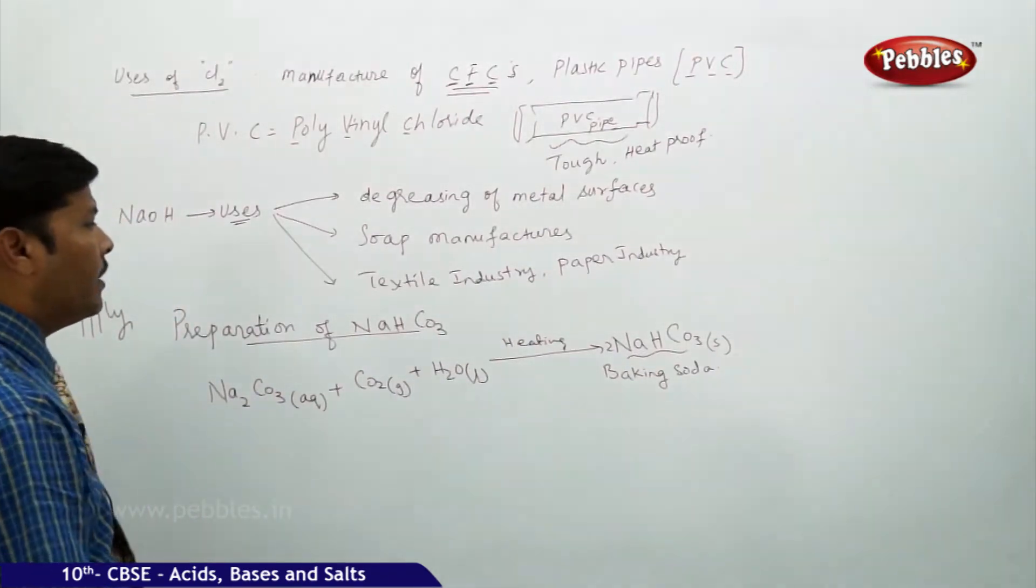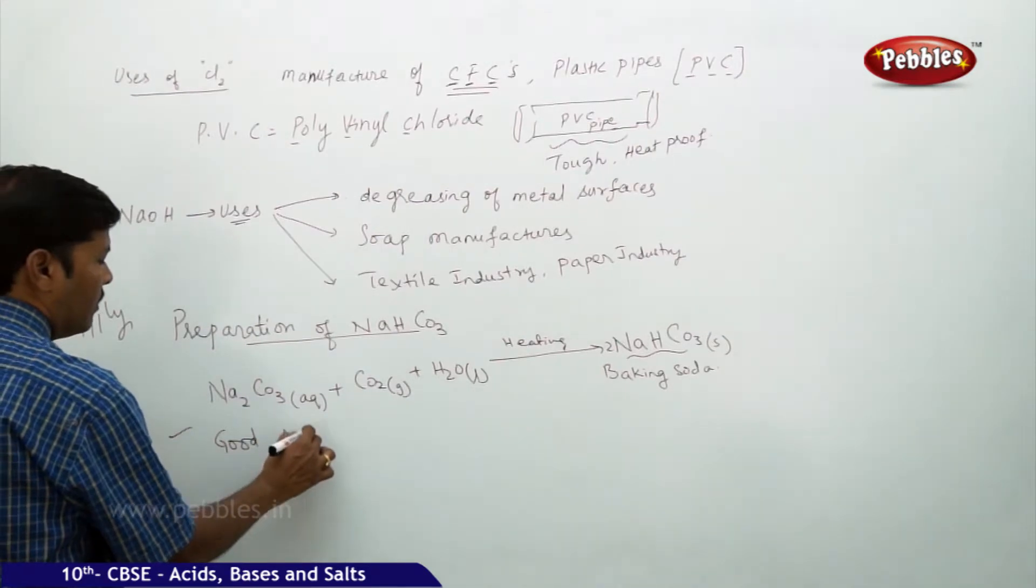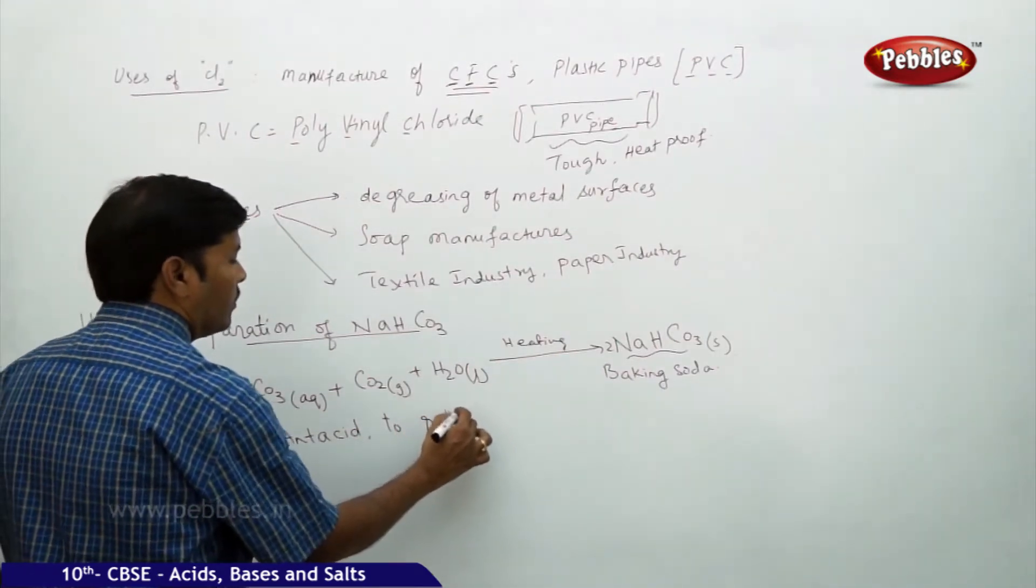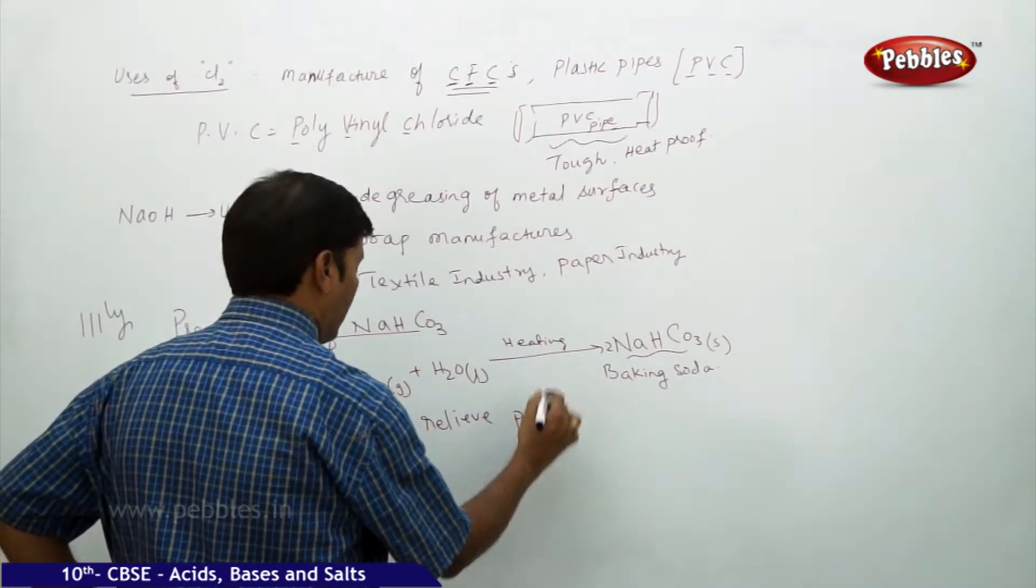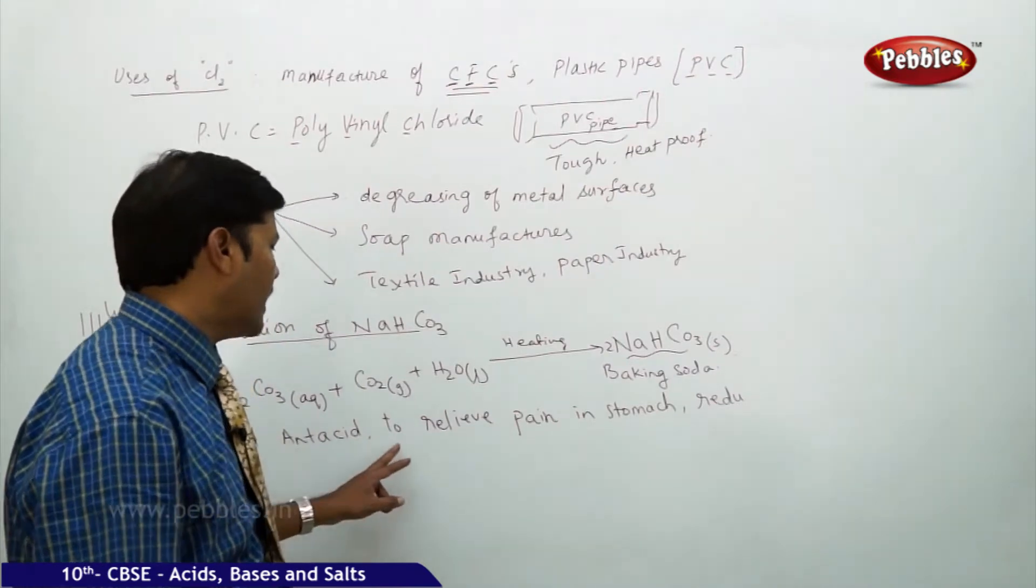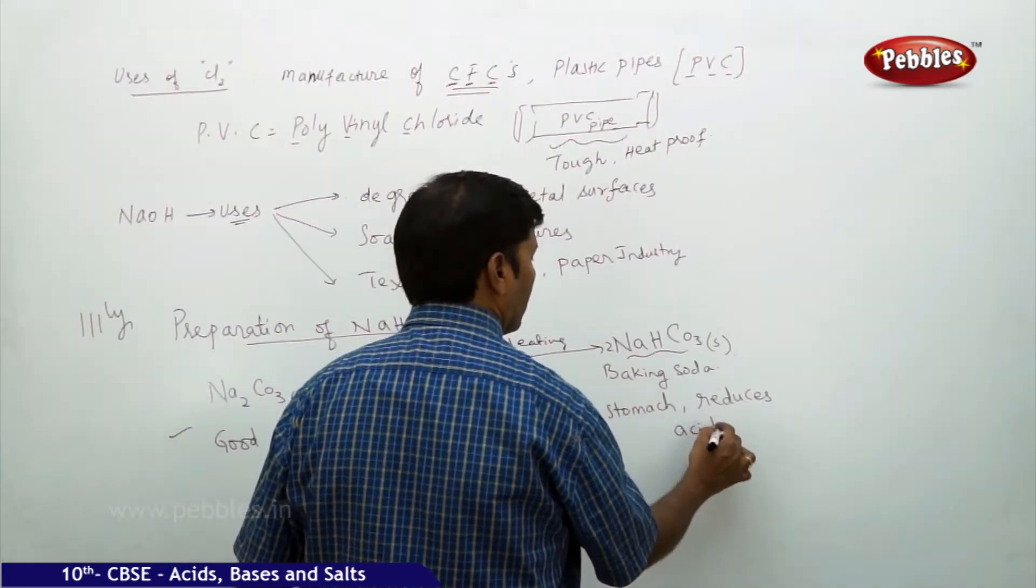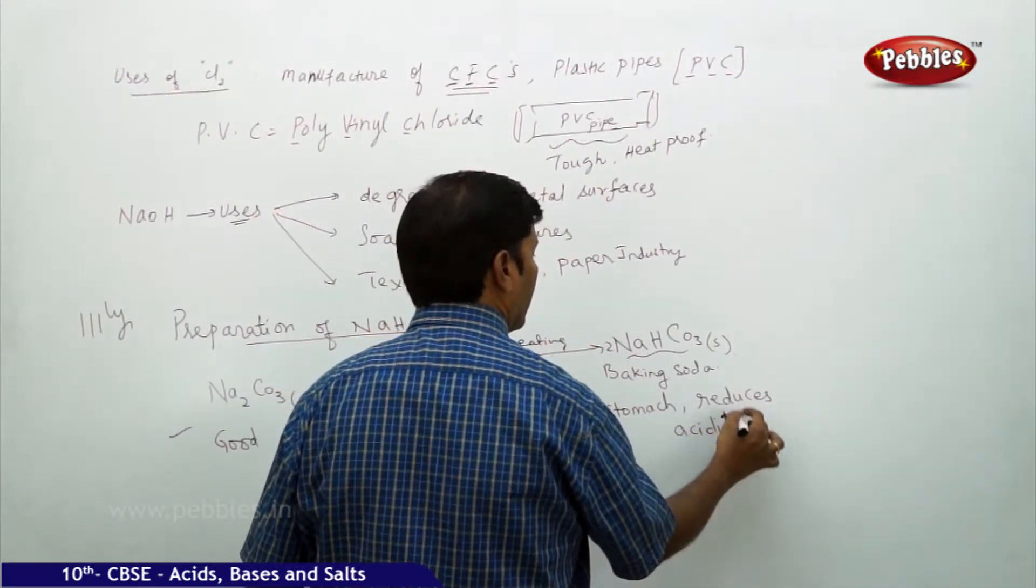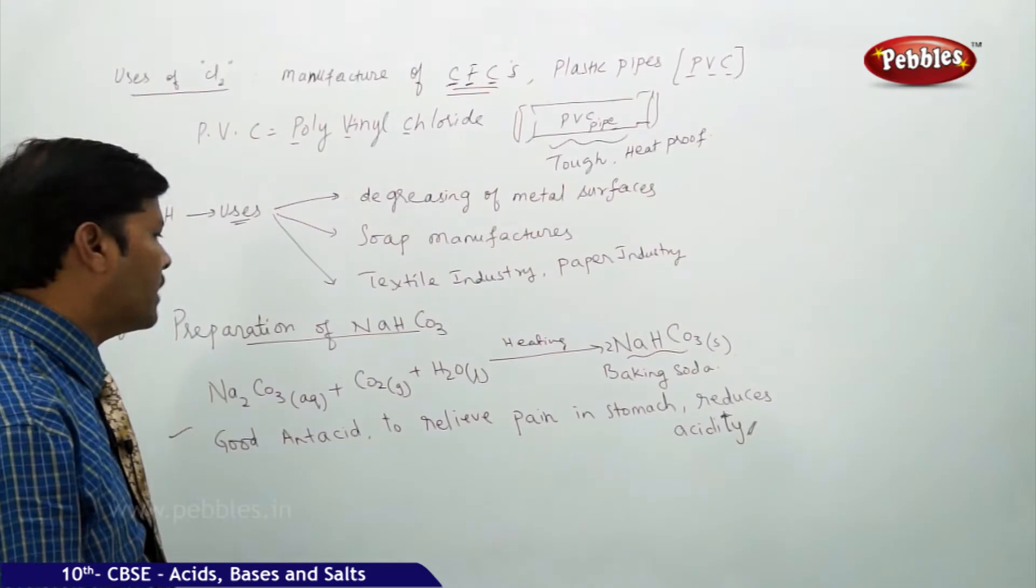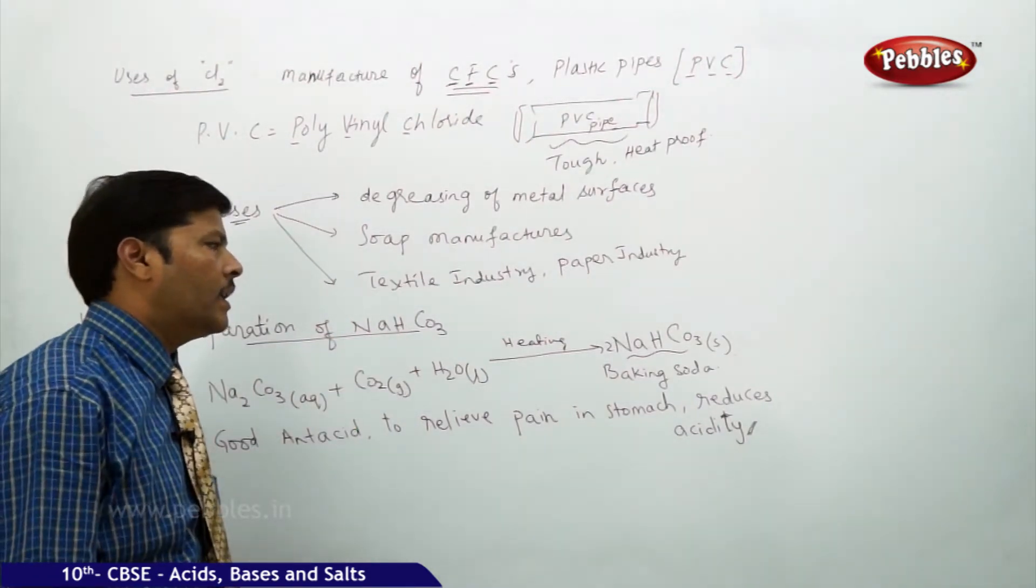This is how we try to prepare the baking soda. This baking soda is a good antacid to relieve pain in stomach. It reduces acidity, thereby bringing relief to the person suffering from acidity. Gastrointestinal acidity can be temporarily relieved by taking this sodium bicarbonate as an antacid.